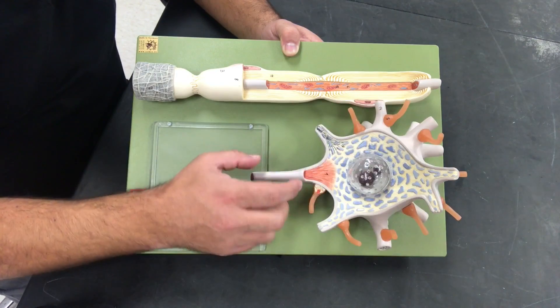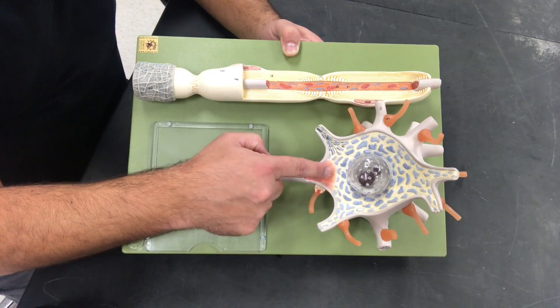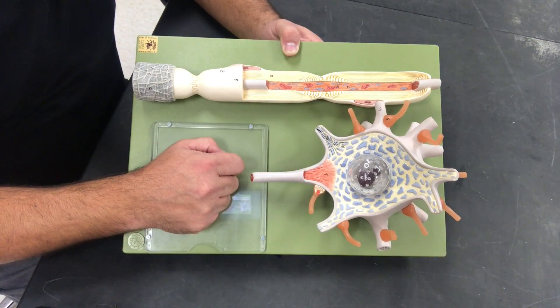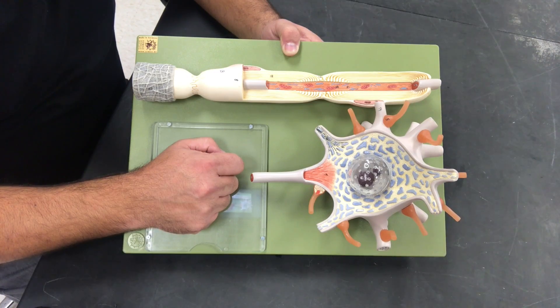Now again there's three different ways that these synaptic end bulbs can come and touch and communicate with this soma, with this multipolar neuron.